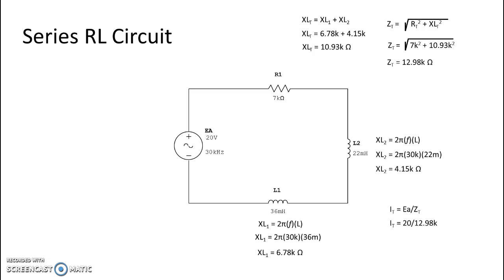So I take my 20 divided by my 12.98k ohms and I get a total current for this circuit of 1.54 milliamps. The final thing we're going to do is look at our voltage drops for our individual components.